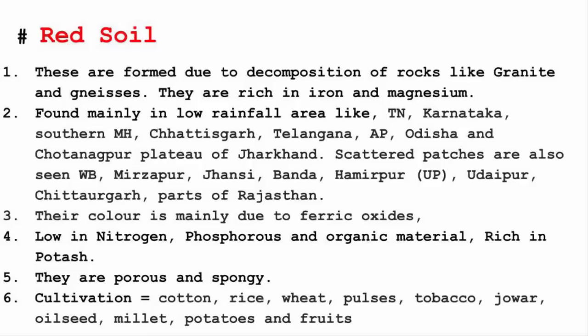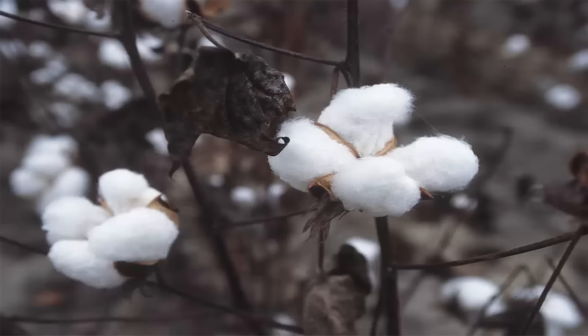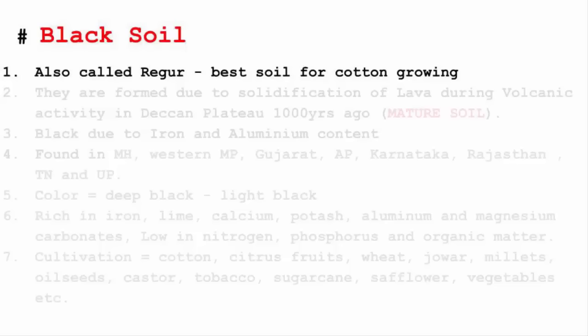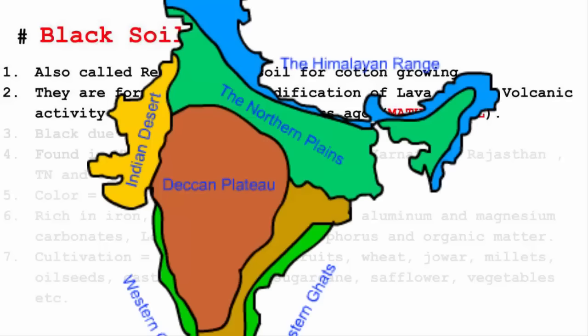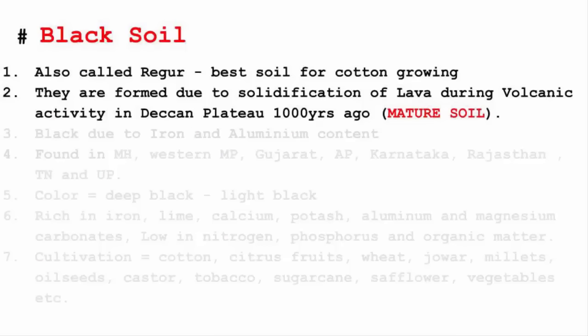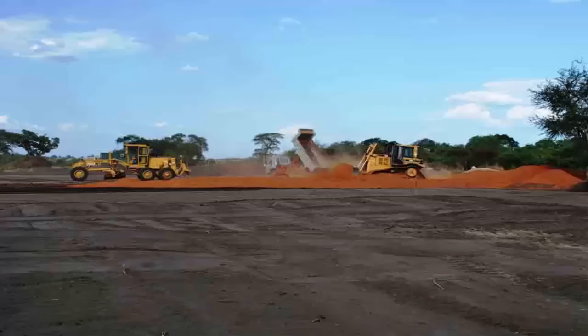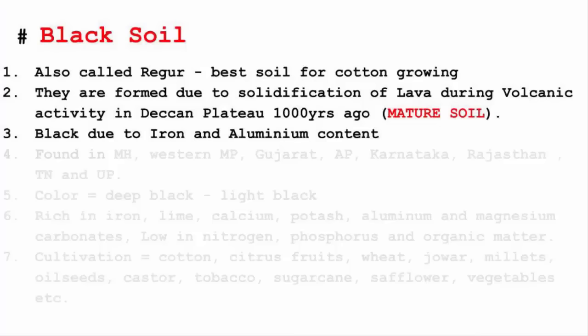Black soil is also called regur and it is the best soil for cotton growing. Think of it this way: black soil which is black in color, and cotton which is white — black and white, just remember this. They are formed due to solidification of lava during volcanic activity in the Deccan Plateau. It is also called mature soil because of its age — it's a thousand years old. The reason behind black soil being black is the content of iron and aluminium in it.